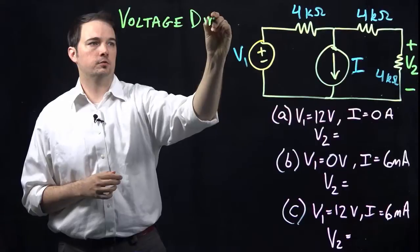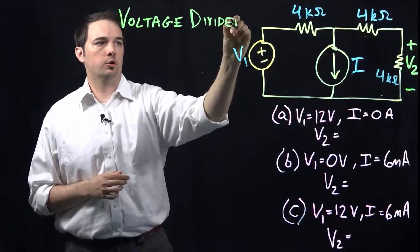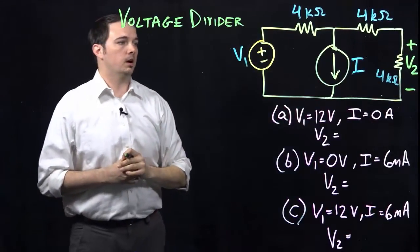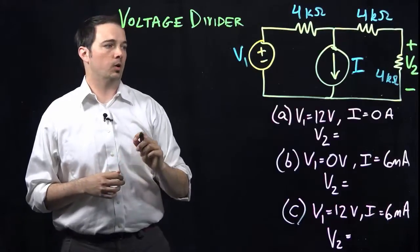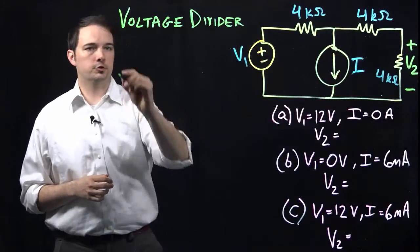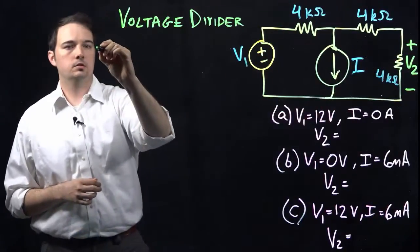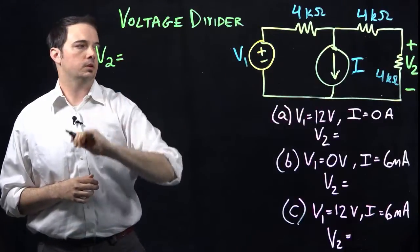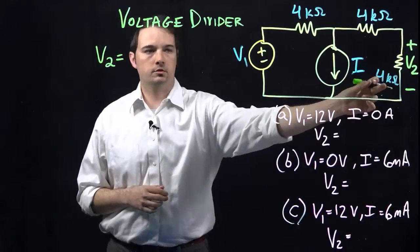And again, the voltage divider derives from Kirchhoff's voltage law overall, which you're hopefully aware of as well. In this case, we have just three series resistors, one voltage source. I want to know what the voltage V2 is.